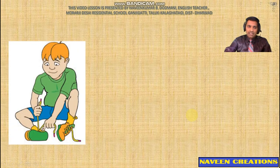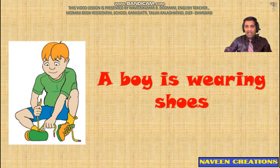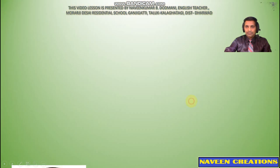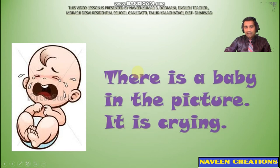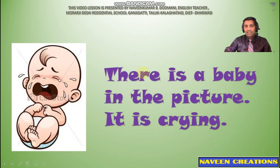In the next picture we can find a boy who is trying to do something. That can be described in a simple sentence: a boy is wearing shoes. In the following picture we can find a baby which is crying a lot. We can make sentences like: there is a baby in this picture. It is crying.